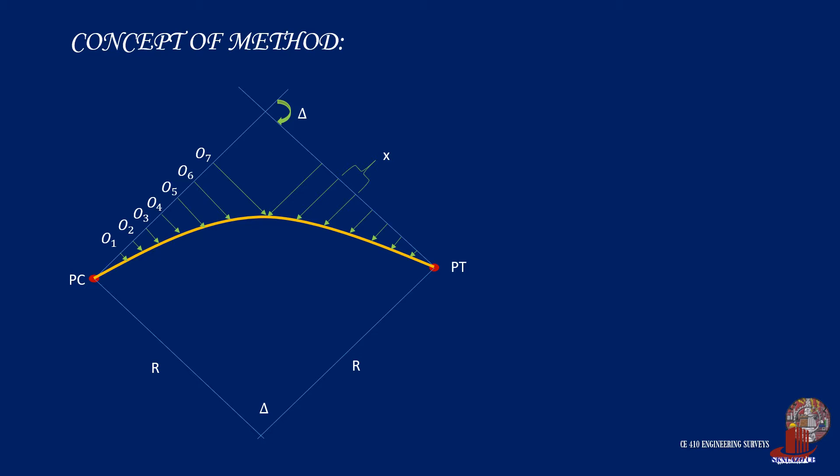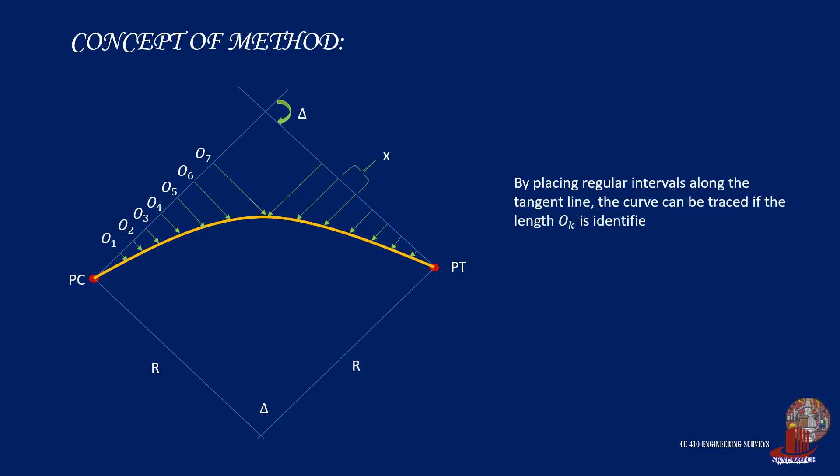Take note that these distances should be perpendicular to the tangent line, thus they would be inclined at 90 degrees. By learning the distance of O from the set of intervals, the curve can be drawn.